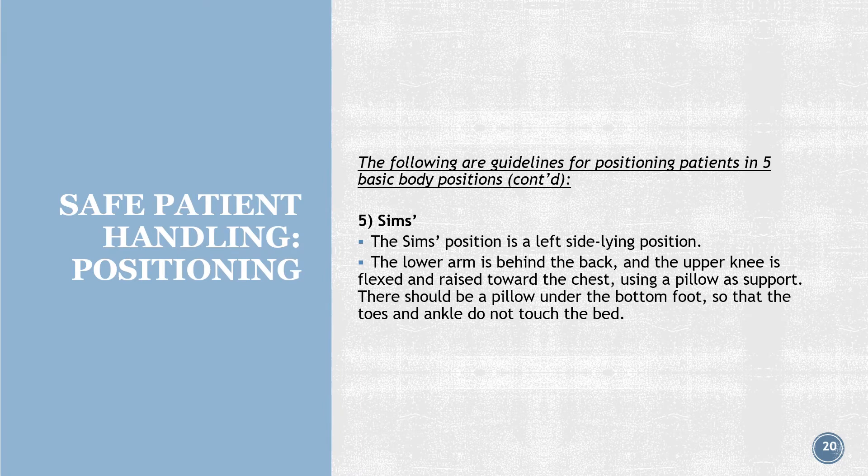Position 5 — Sims: the Sims position is a left-side lying position. The lower arm is behind the back and the upper knee is flexed and raised toward the chest using a pillow for support. There should be a pillow under the bottom foot so that the toes and ankle do not touch the bed.